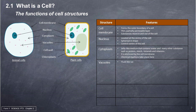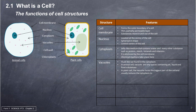Vacuoles: fluid-like sacs found in the cytoplasm. In animal cells, vacuoles are tiny spaces containing air, liquid, and food substances. In plant cells, the vacuole forms the biggest part of the cell and usually reduces the cytoplasm to a thin lining. In every plant cell, there is usually one vacuole filled with cell sap, which contains water and dissolved substances such as sugar and salt.